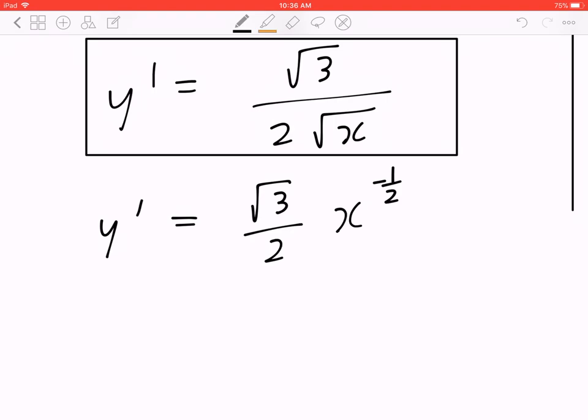So again, you can rewrite this in exponent form, and once you have that, y double prime equals root 3 over 2 times negative half, which is negative root 3 over 4 times x to the power of negative 3 over 2.